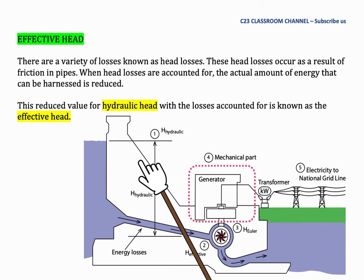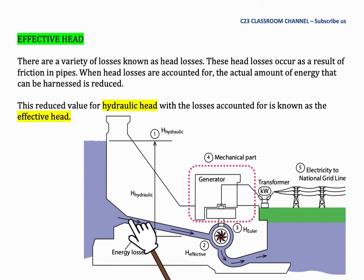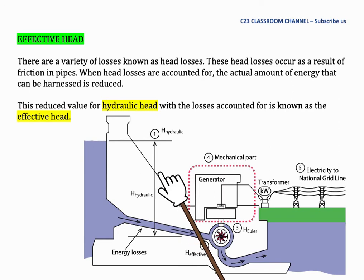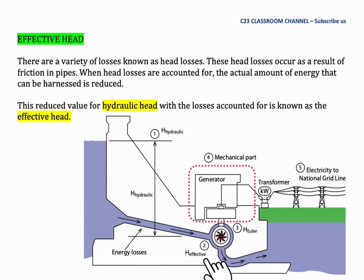From this diagram, we could understand that water from this dam will have potential energy by this height. This water will flow to the Francis turbine in a pipe system. As we learned previously, in a pipe system like this, there are losses due to friction. We need to deduct the hydraulic head with the energy losses along the pipe. The net head that occurs at the Francis turbine inlet is called the effective head — it is the effective head that becomes the input for the Francis turbine.